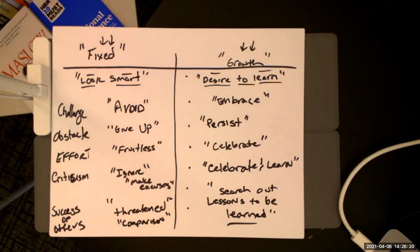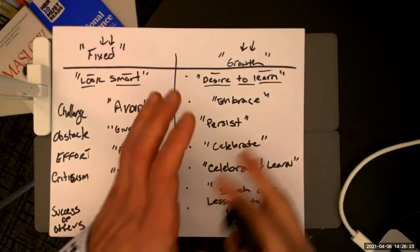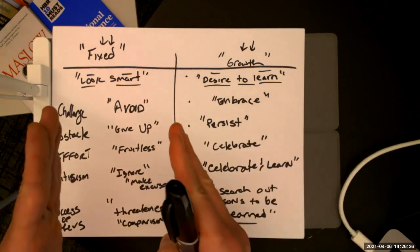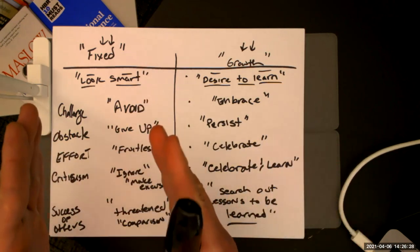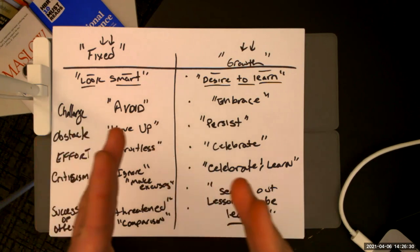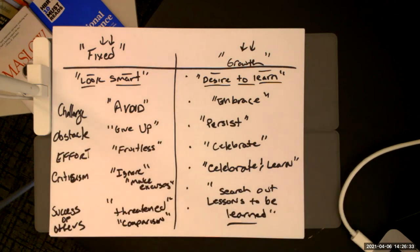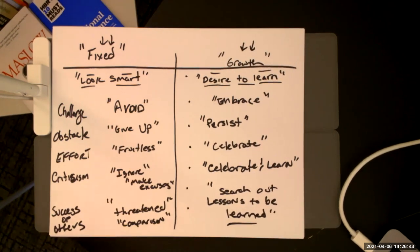Not only individuals, but organizations tend to be in one of these two mindsets. You could look at different companies and say 'that's clearly a company in a fixed mindset' or 'that's clearly a company in a growth mindset.' Think about that as you're doing your next homework assignment in the context of mindset.